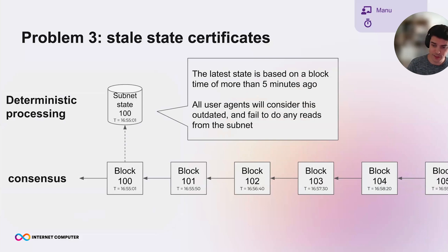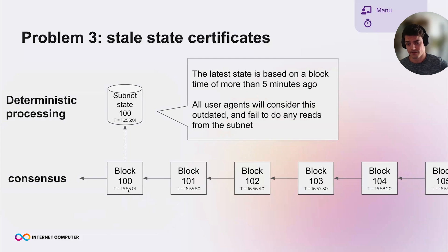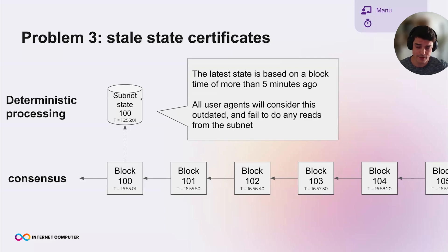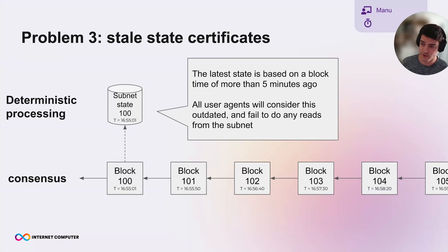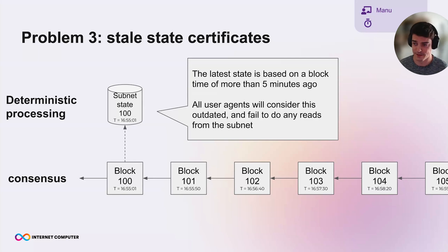Because of the first two problems, there were super-long processing rounds and a large backlog of consensus blocks. Blocks were effectively about a minute apart. This led to a state where the most recently computed state was based on a block from more than five minutes ago. Because users check that the state is not more than five minutes old and reject it otherwise, everybody considered any answer from replicas invalid. Even though some messages were still being processed, nobody could see that their message was being processed.